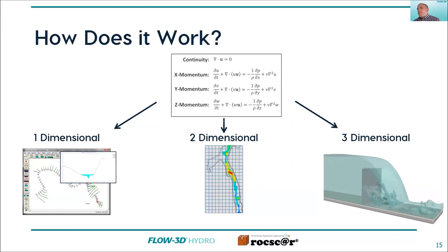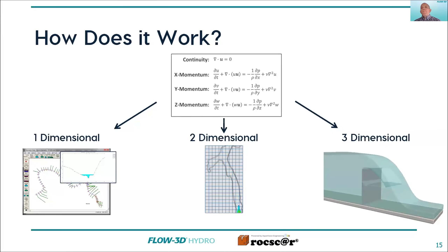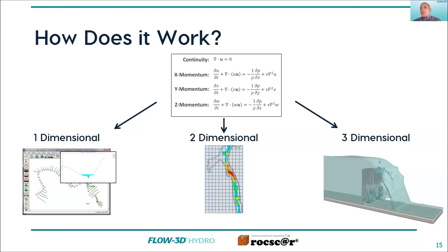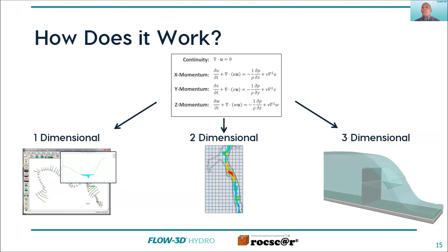A lot of you here probably have some background in modeling — you've probably used 1D and 2D tools. We're all still using the same equations as part of these models. In a 1D model you have cross-sectional averaging, a 2D model is depth averaging, and a 3D model you're solving each dimension. There are still applications where all of these are going to be the best tool to use. Using the correct tool to solve whatever you need for your problem is extremely valuable. The point we want to make is it's not magic — it's still solving the same equations as your other models.